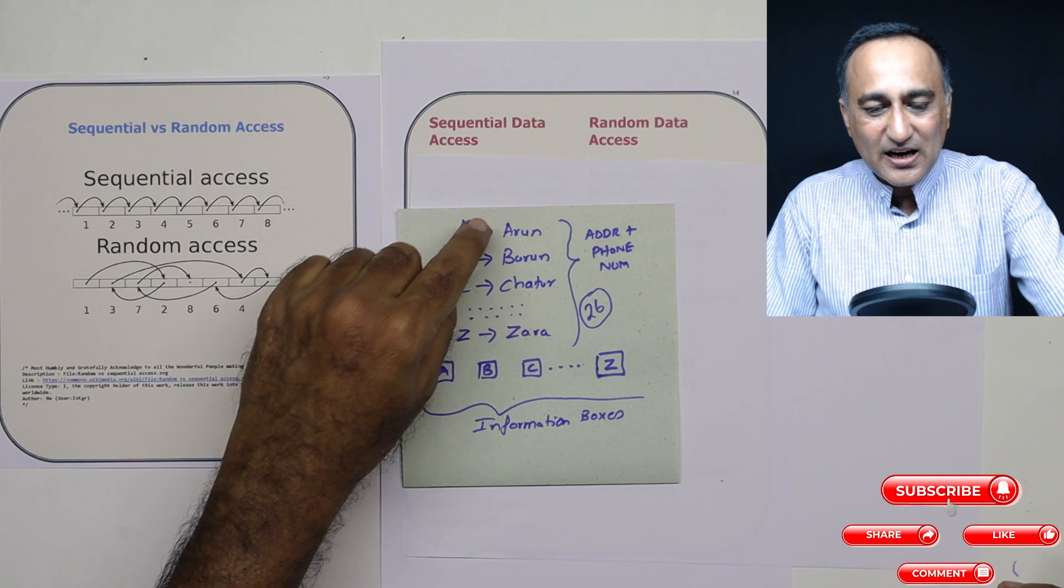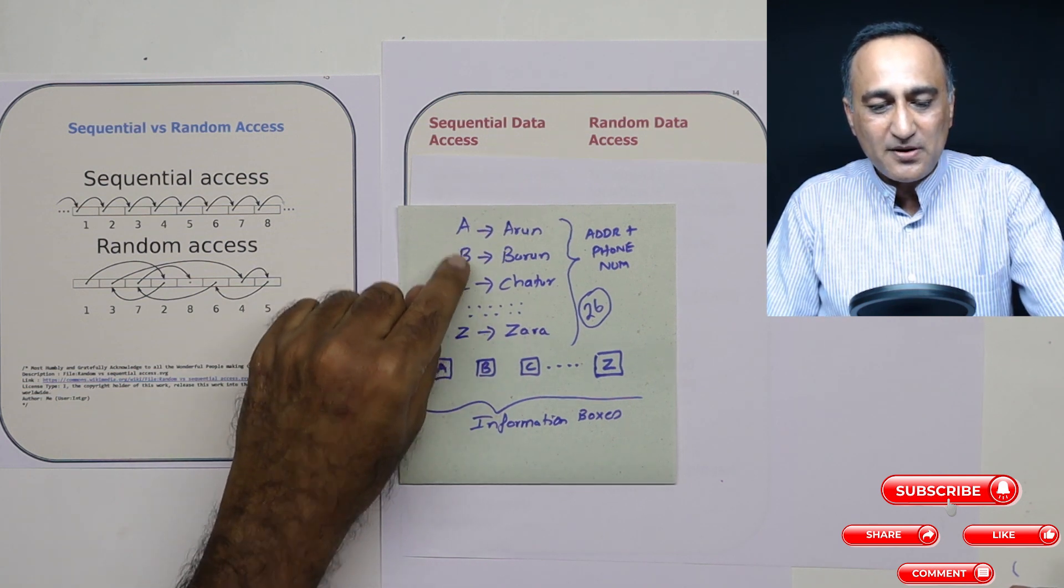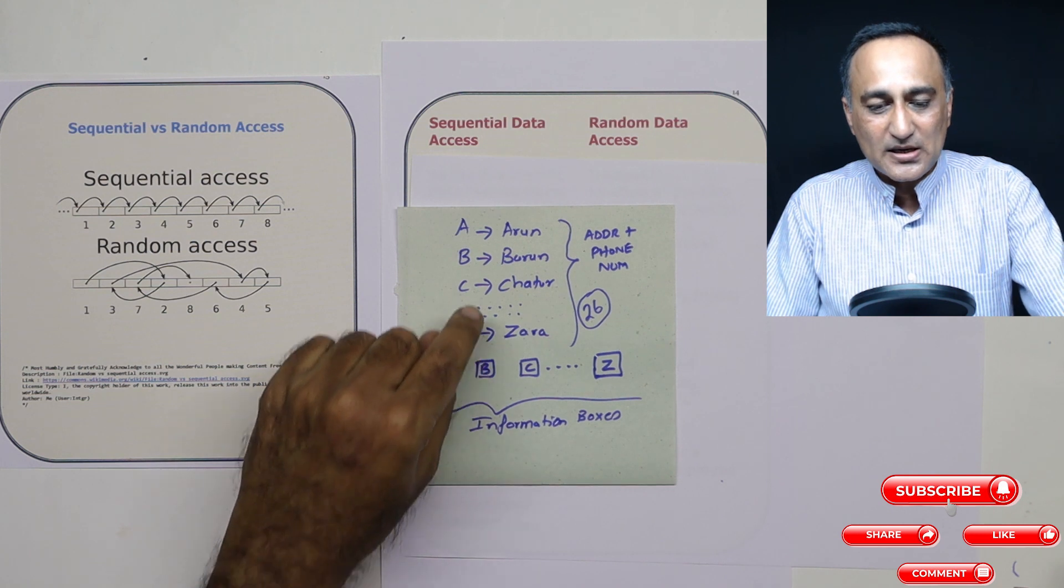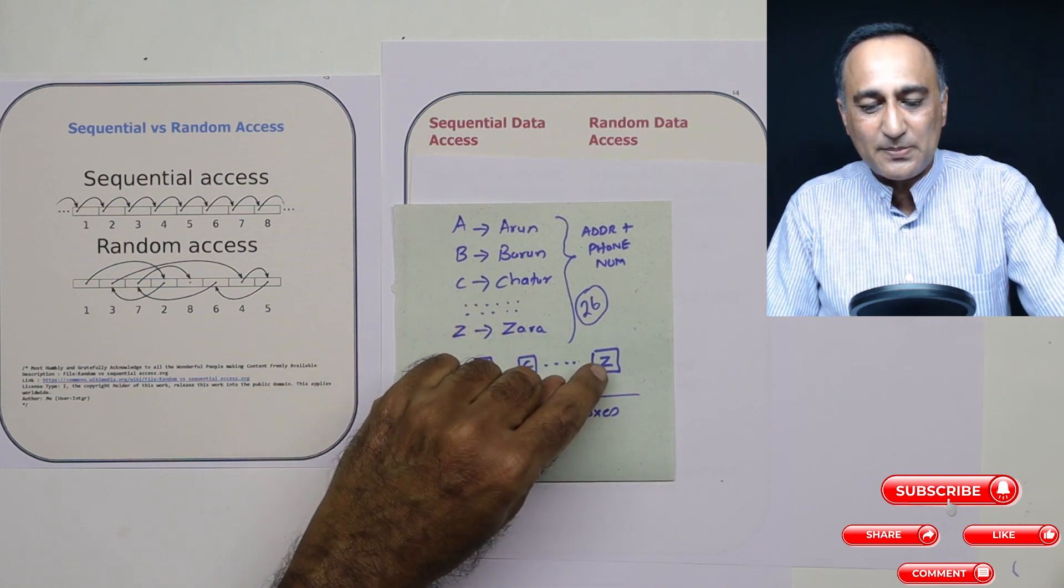So what I do is A for Arun, I keep it in box with the label A. B for Barun, I keep it in box B. C for Chatur, I keep it in box C. And Z for Zara, I keep it in box Z. So from A to Z, I have created 26 boxes.